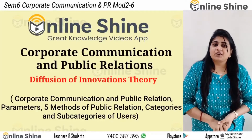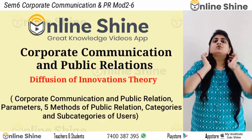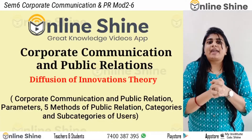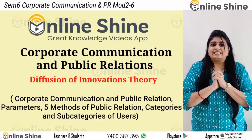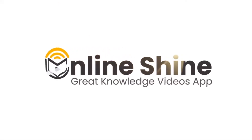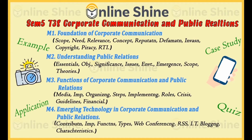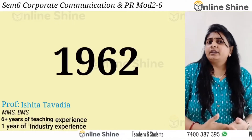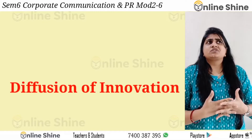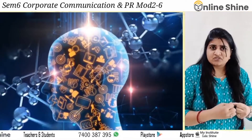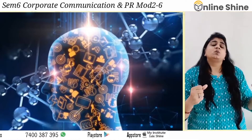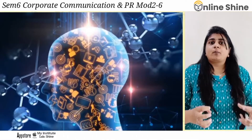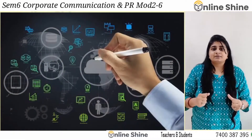The fourth theory of public relations is the Diffusion of Innovation Theory, stated by Everett Rogers in the year 1962. Rogers propounded this theory which basically asked how an innovation, how something which is completely new, gets accepted or adopted by the people or by the market.